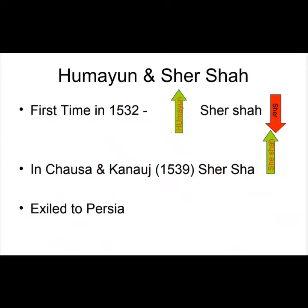Humayun and Sher Shah Suri: The first battle between them was in 1532, in which Humayun won and Sher Shah Suri lost. The second battle was at Chausa and Kannauj in 1539, in which Sher Shah Suri won and Humayun was exiled to Persia.